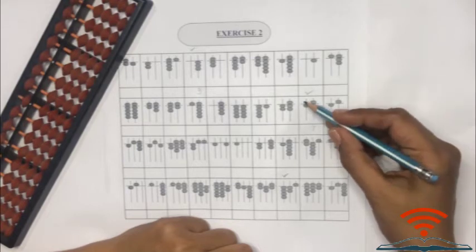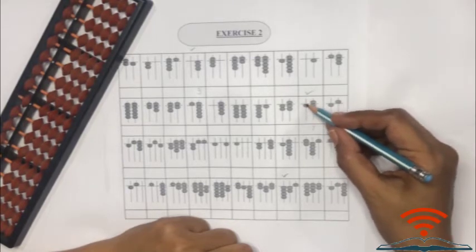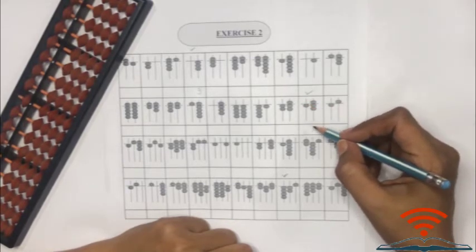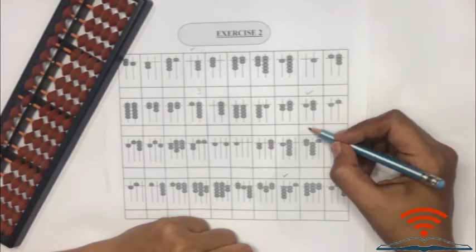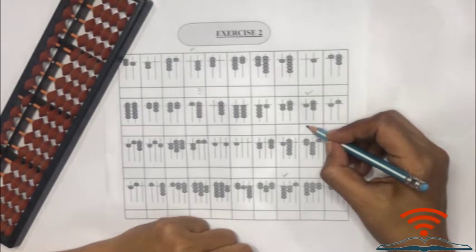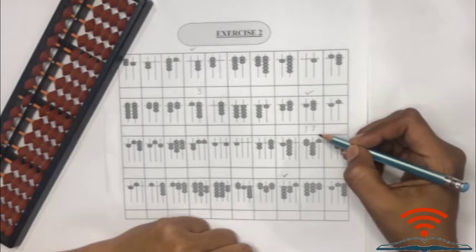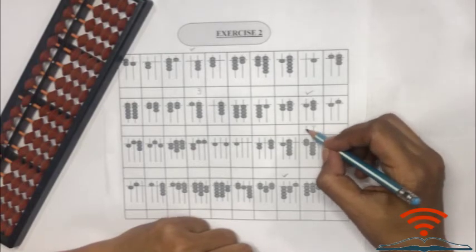The number representing on this digit rod is seven. On tens rod there is only one bead representing 10 as it is below the bar. 10 and 7 is 17.